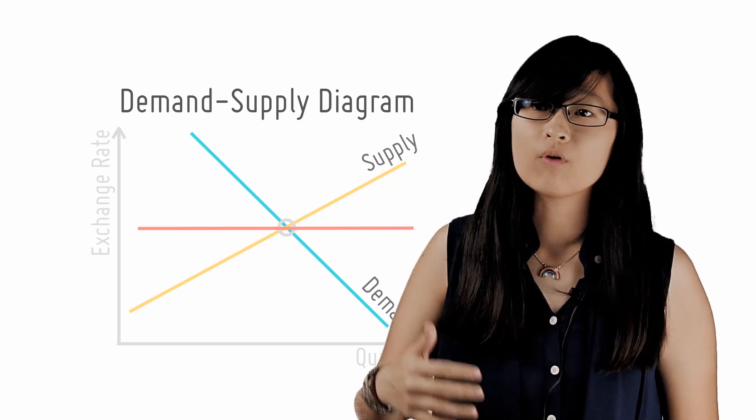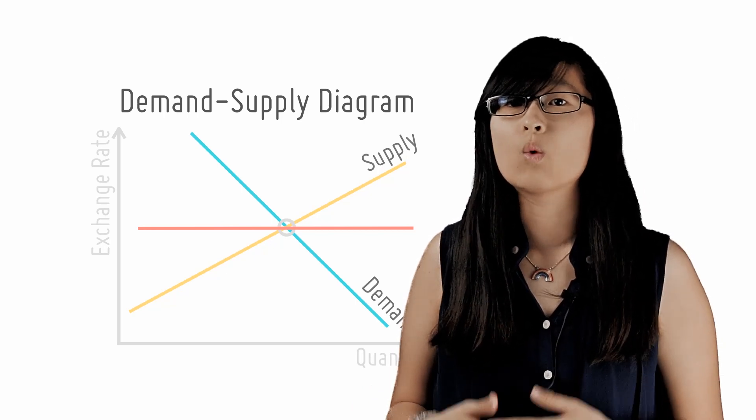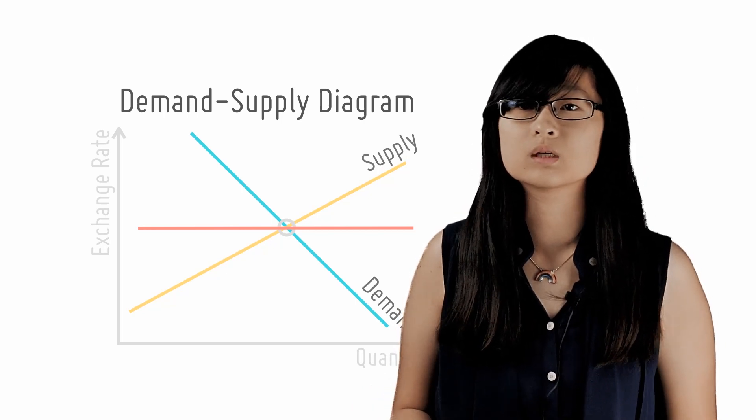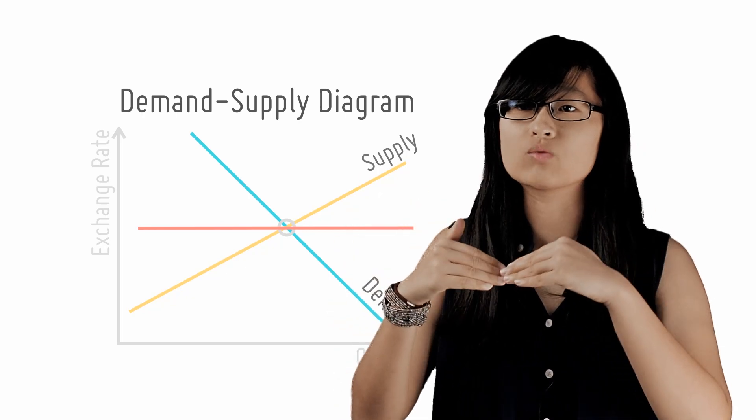So as the exchange rate of Singapore dollar falls, quantity demanded for Singapore dollars increases while the quantity supplied falls. This continues until the equilibrium of exchange rate is reached.